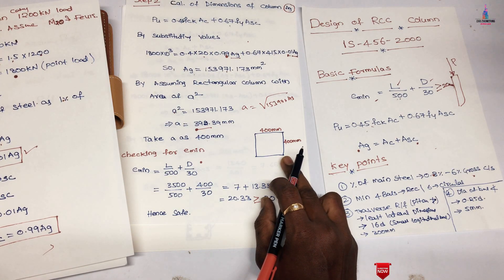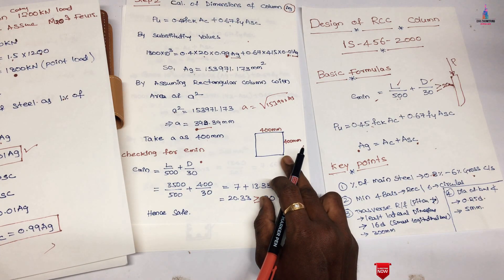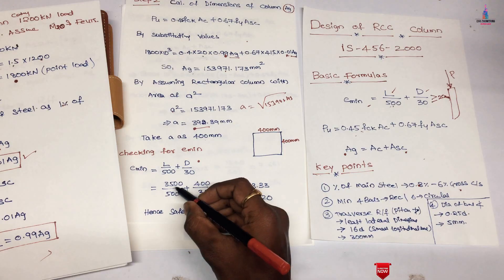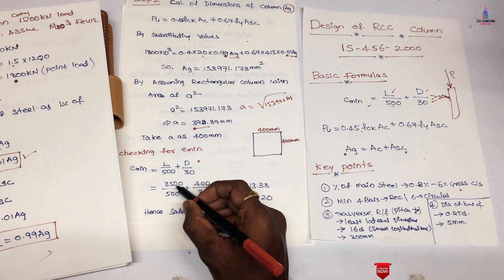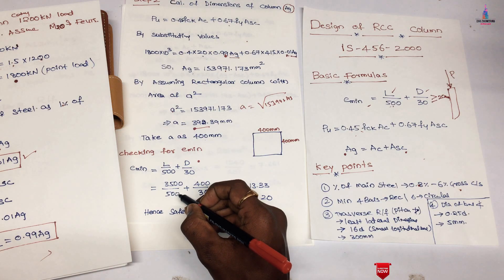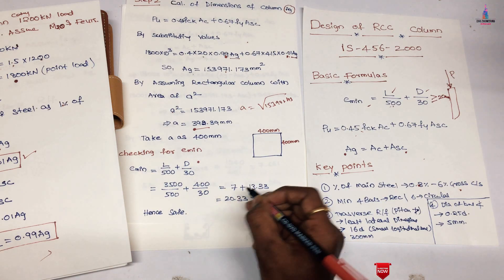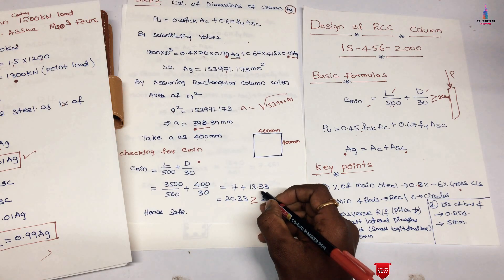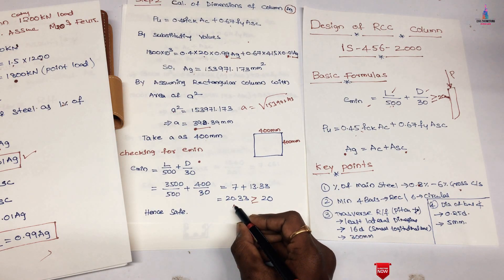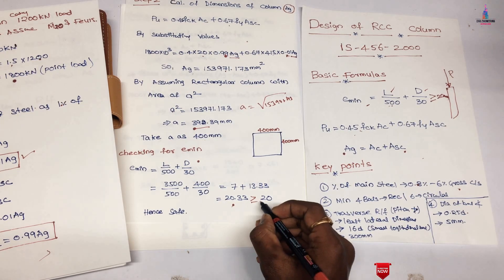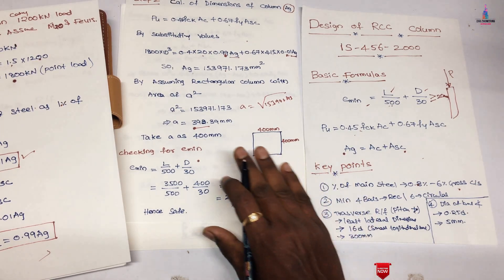We now check whether the e_minimum value is satisfied. Using e_min = L/500 + D/30 = 3500/500 + 400/30 = 7 + 13.33 = 20.33 mm. Since 20.33 mm > 20 mm, the condition is satisfied and the section is safe.